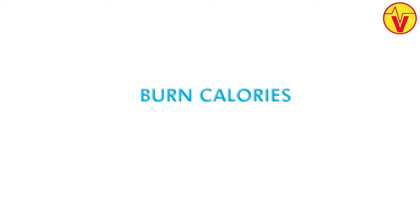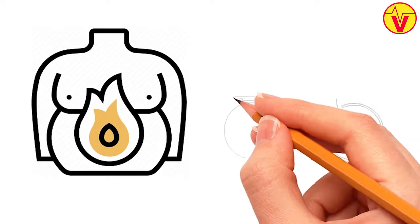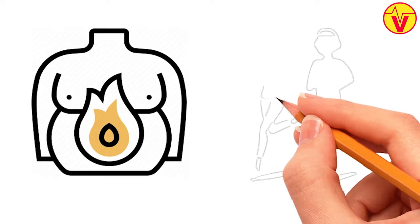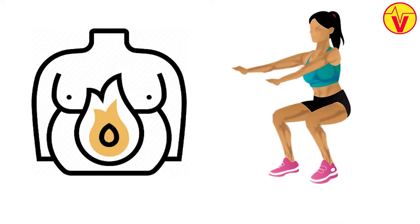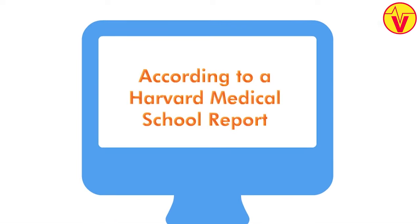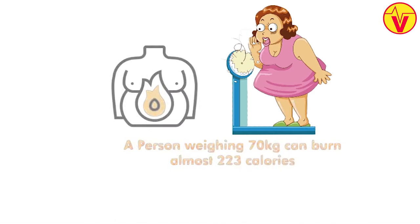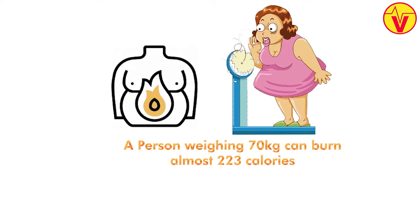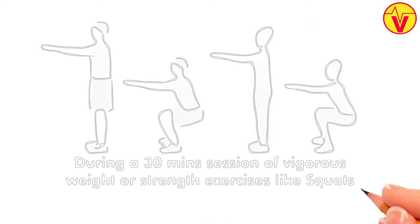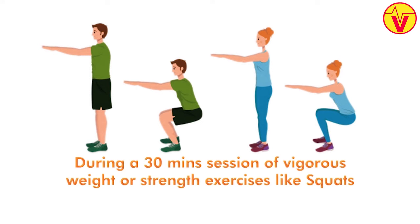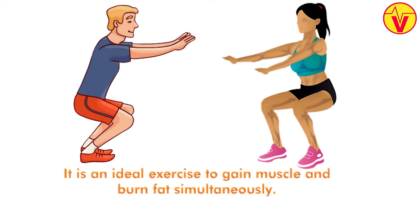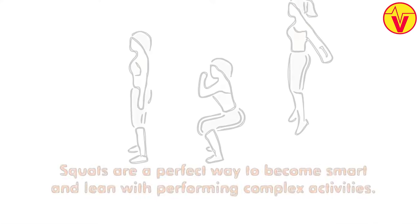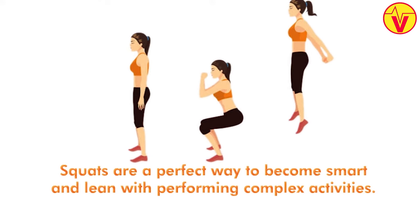3. Burn Calories. Most often, calorie burning is associated with exercises like cycling and running, but performing compound and high-intensity movements like squats can burn a serious amount of calories. According to a Harvard Medical School report, a person weighing 70 kg can burn almost 223 calories during a 30-minute session of vigorous weight or strength exercise like squats. Hence, it is an ideal exercise to gain muscle and burn fat simultaneously. Squats are a perfect way to become lean without performing complex activities.